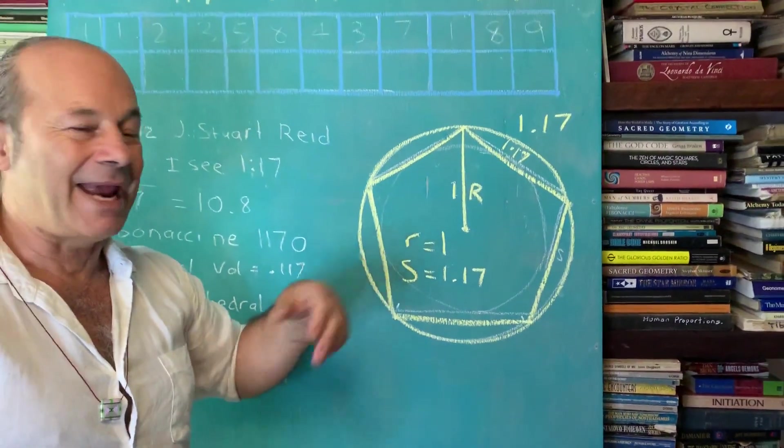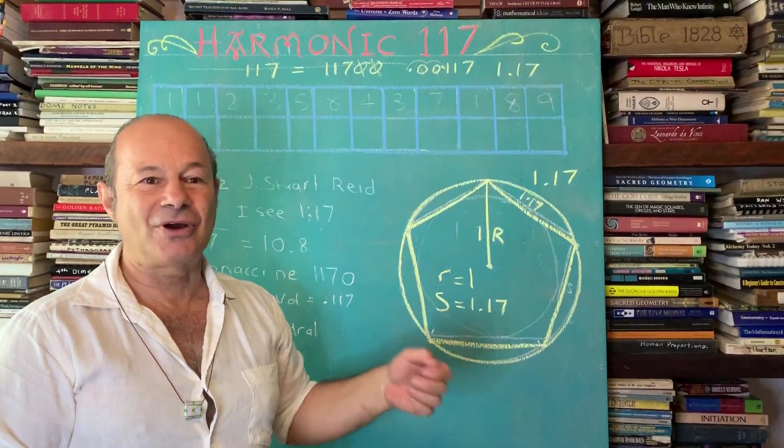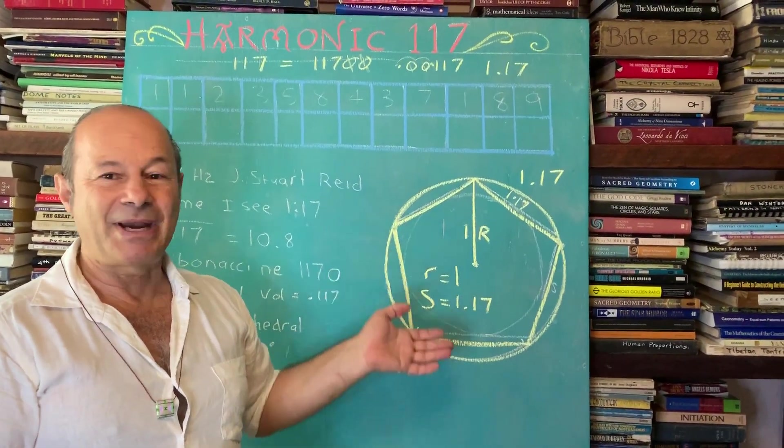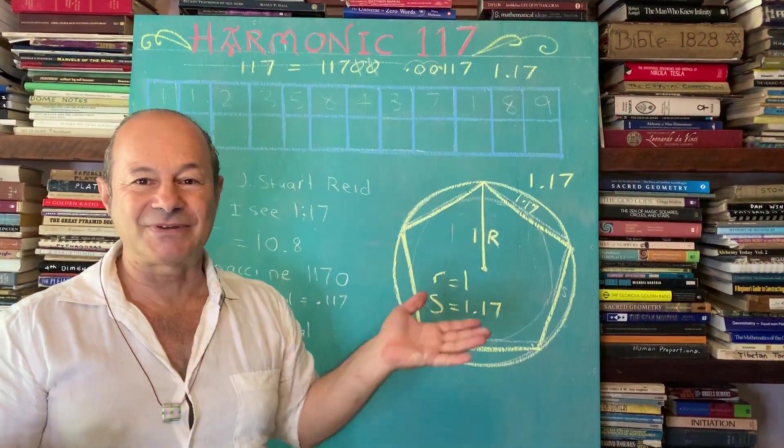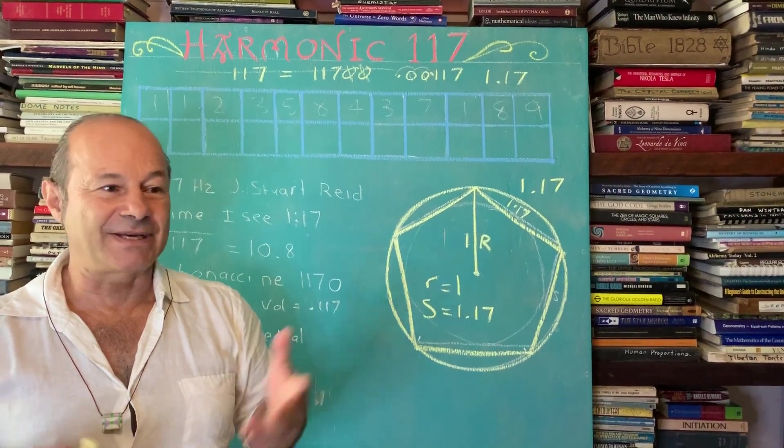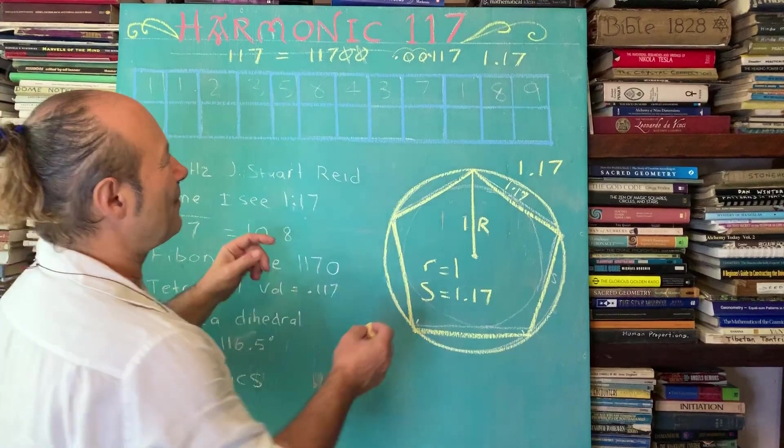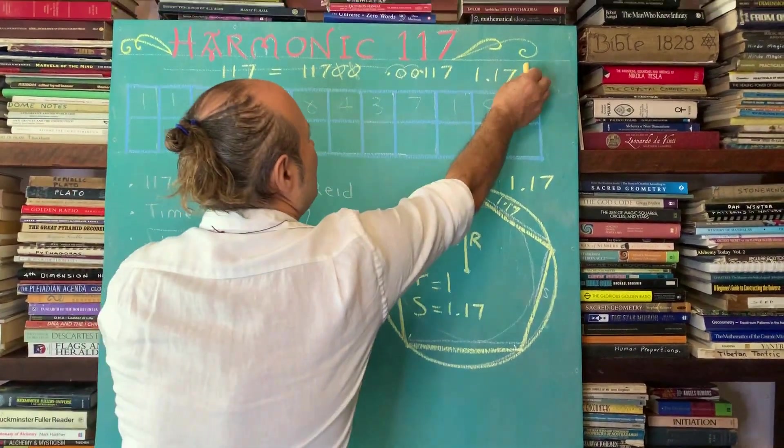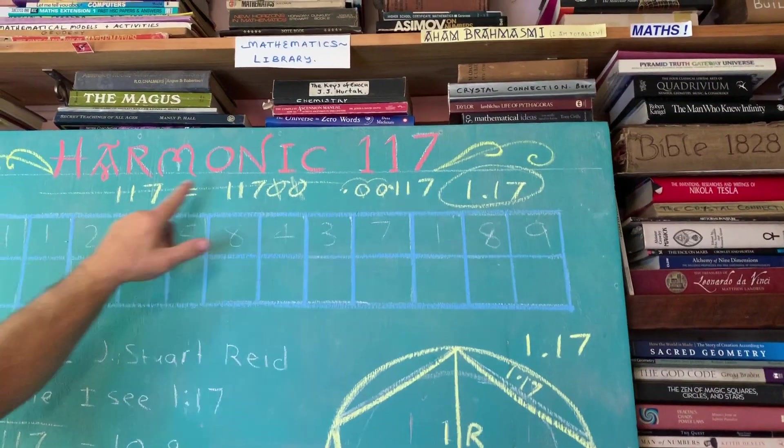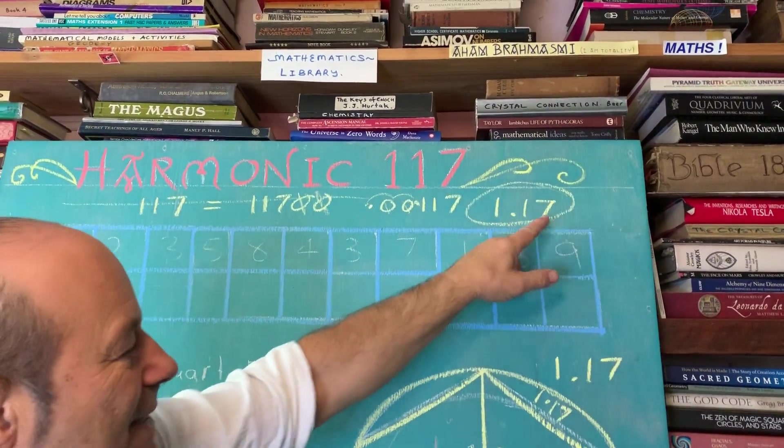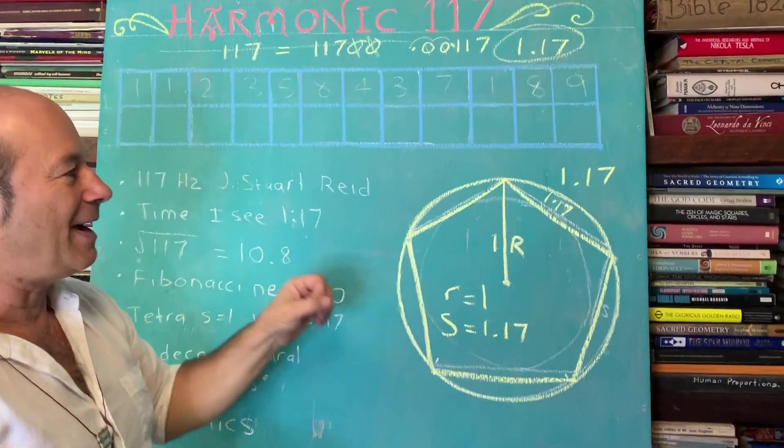There's nothing new. This is something that you can find in any good mathematical textbook. This is about ancient knowledge, timeless mathematical principles. If the radius is 1, the pentagon will always have a side of 1.17. It won't ever change. It's just a mathematical fact. So that happens to be this number over here. See where we said we could slide the decimal? So now we've got 1.17. That's our first example of harmonic 1.17.